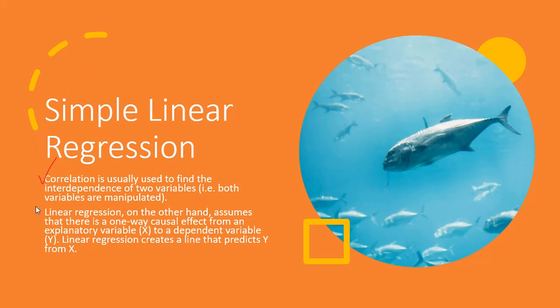On the other hand, linear regression assumes that there is a one-way causal effect from the explanatory variable to a dependent variable.